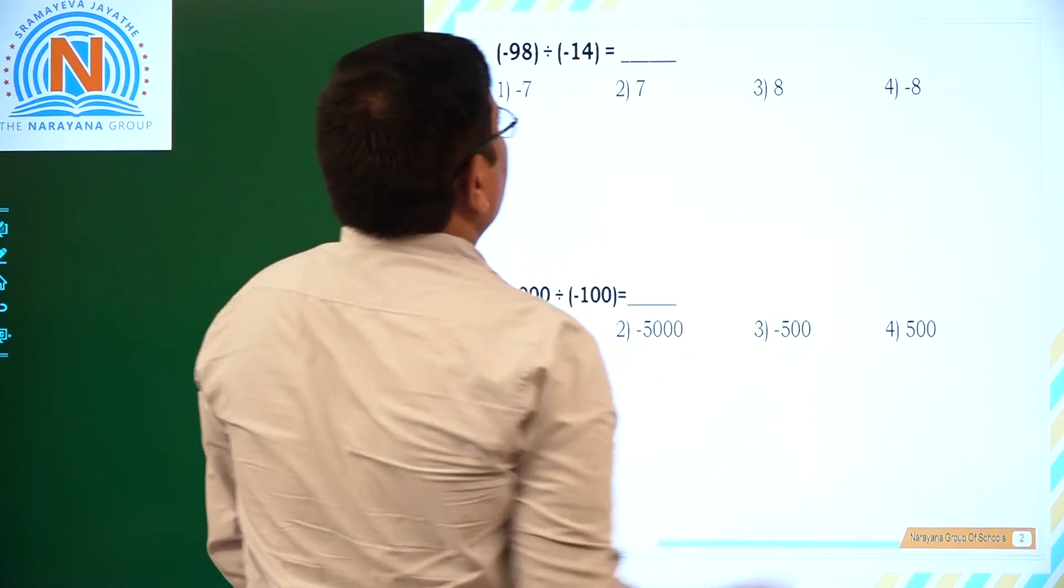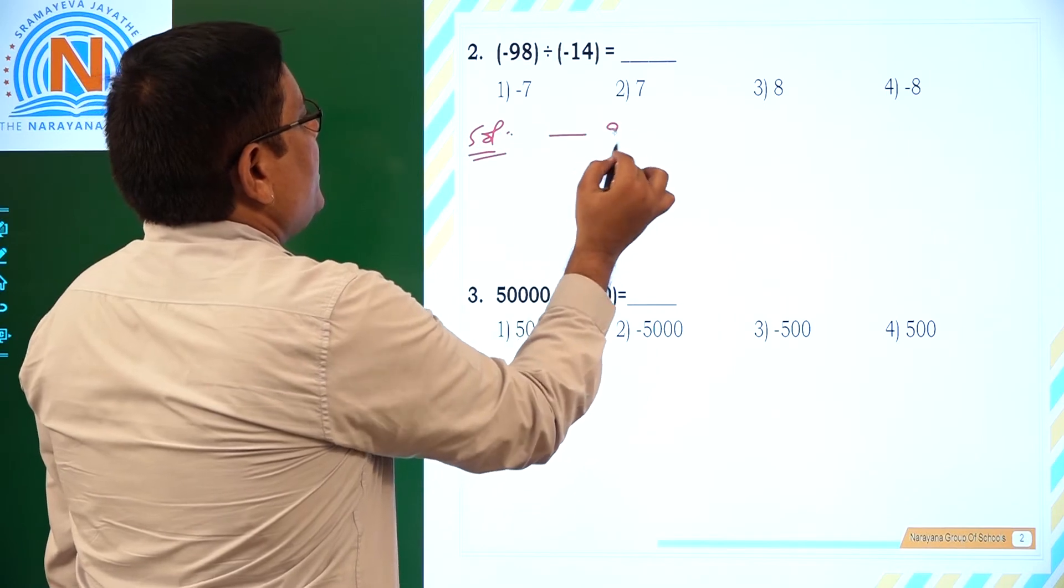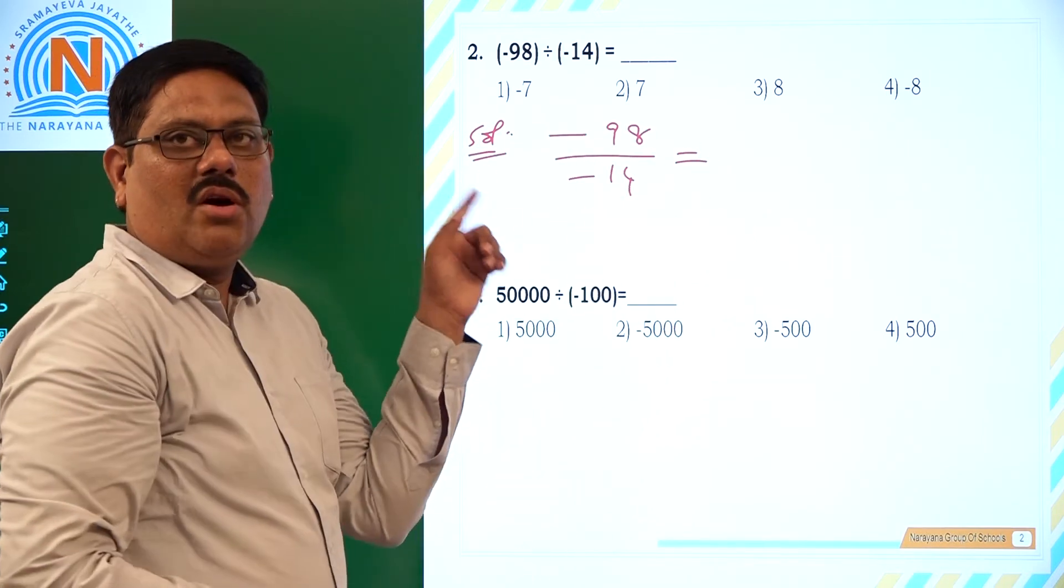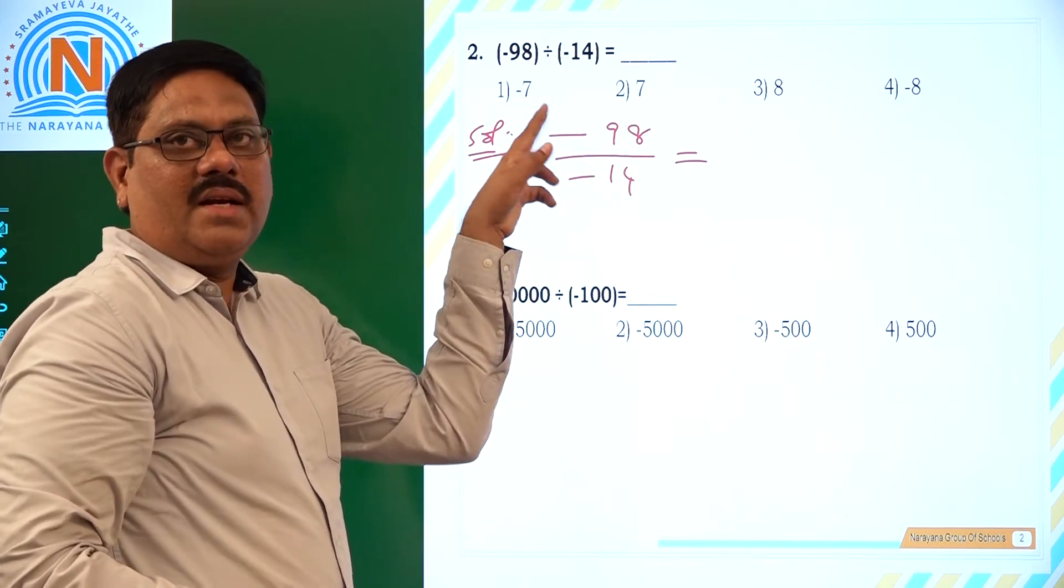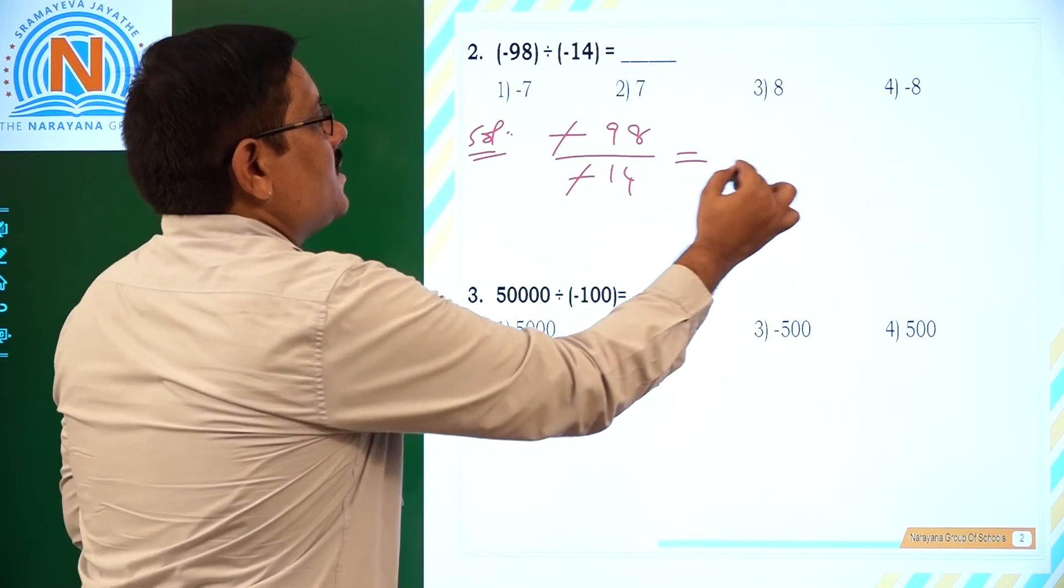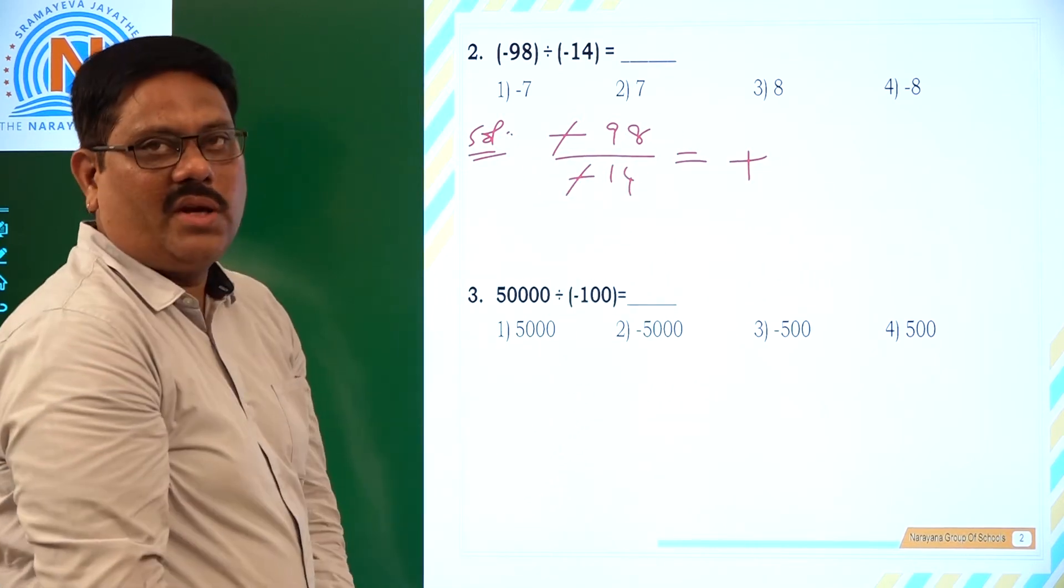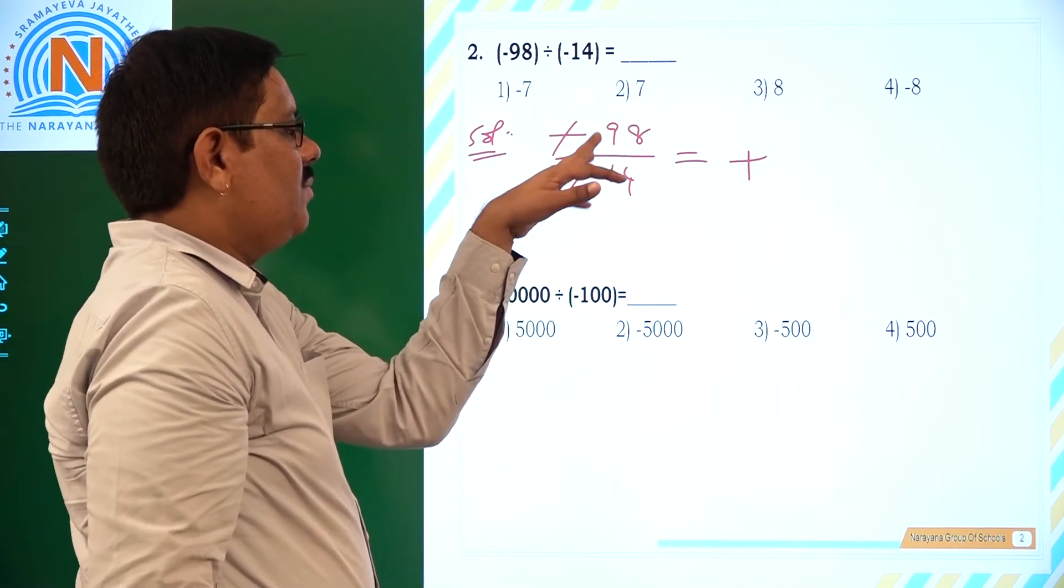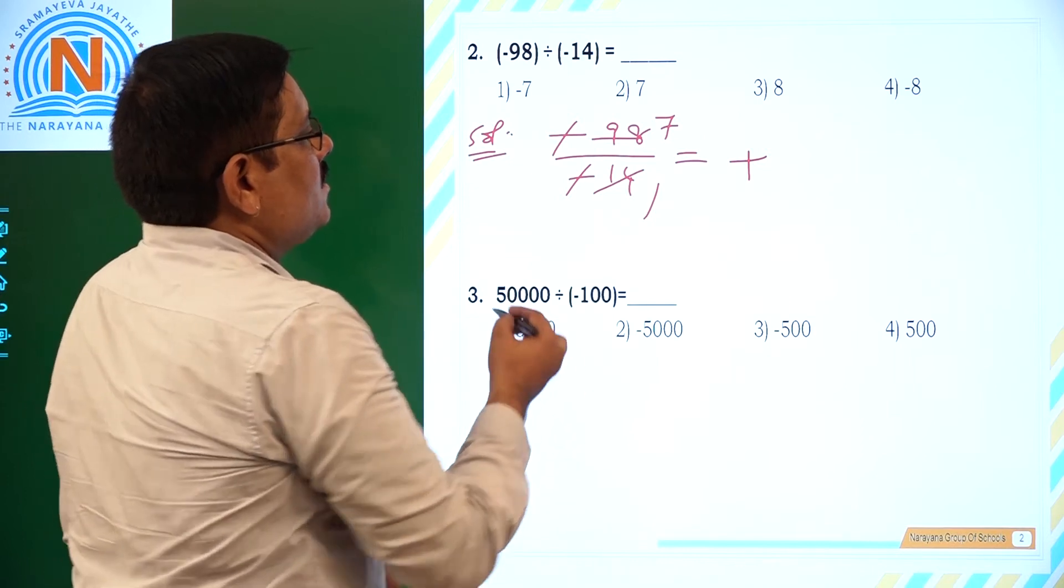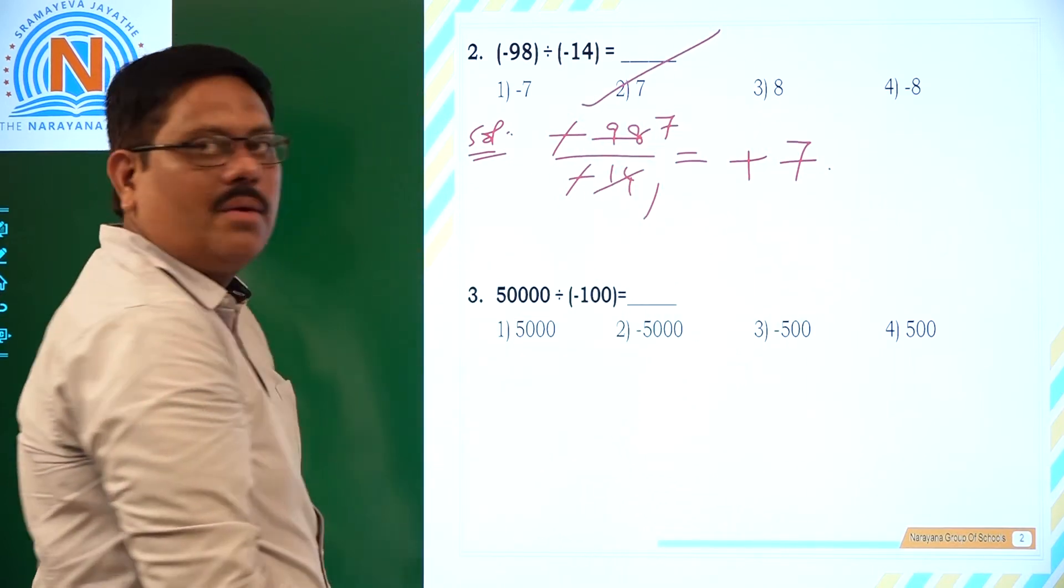Next. If you are asked to find out minus 98 by minus 14. Here numerator and denominator have same sign. Either it is plus sign or minus sign, the resultant becomes positive. Plus 98 by 14. Now we have to do simplification. 14 ones are 98. So the answer is plus 7, which is the second option.